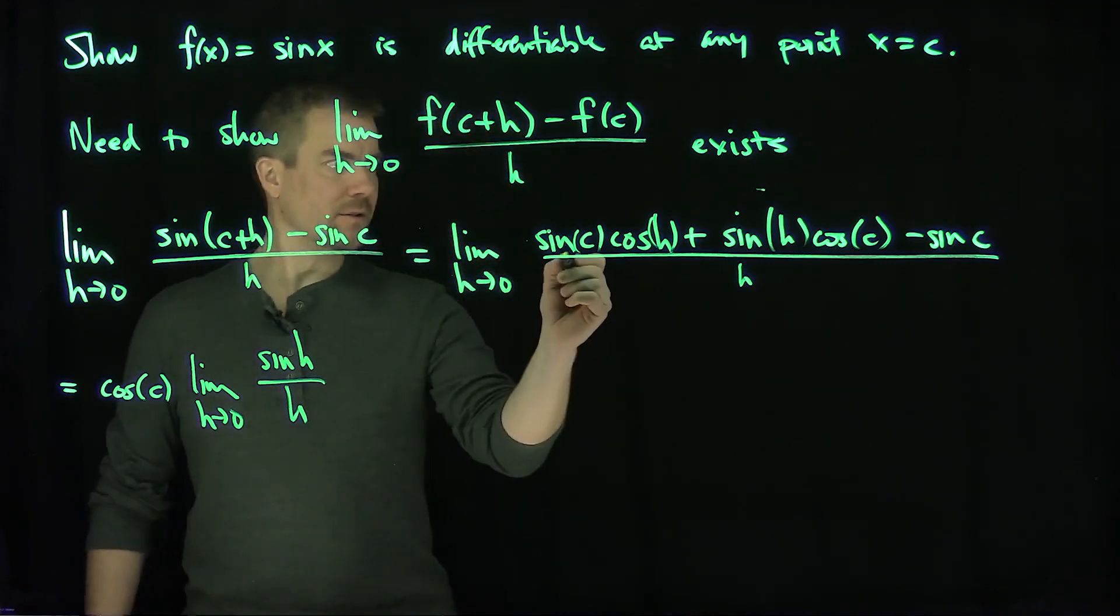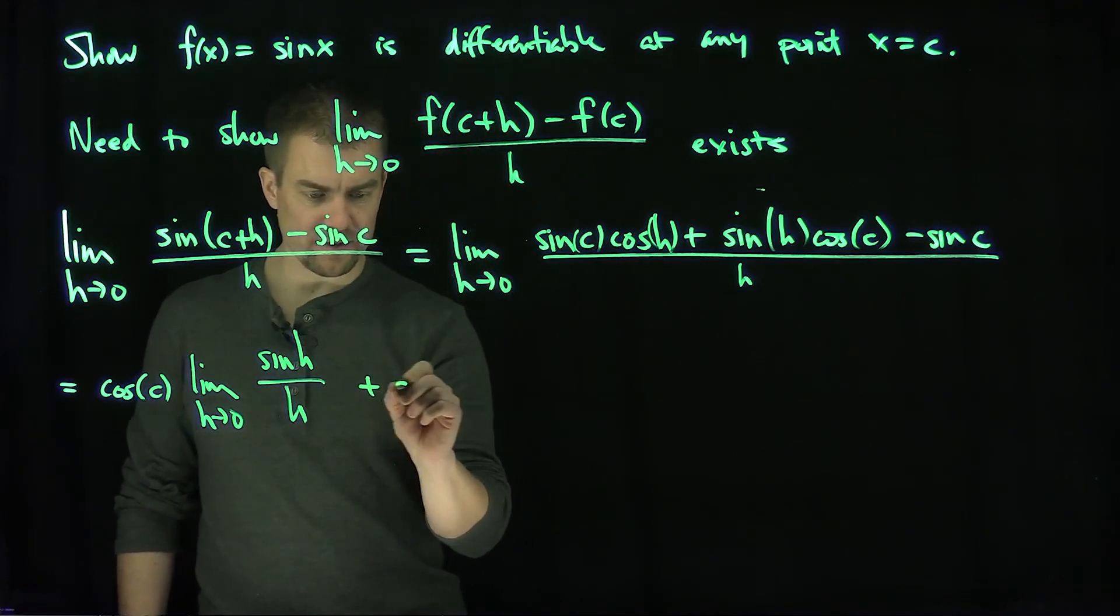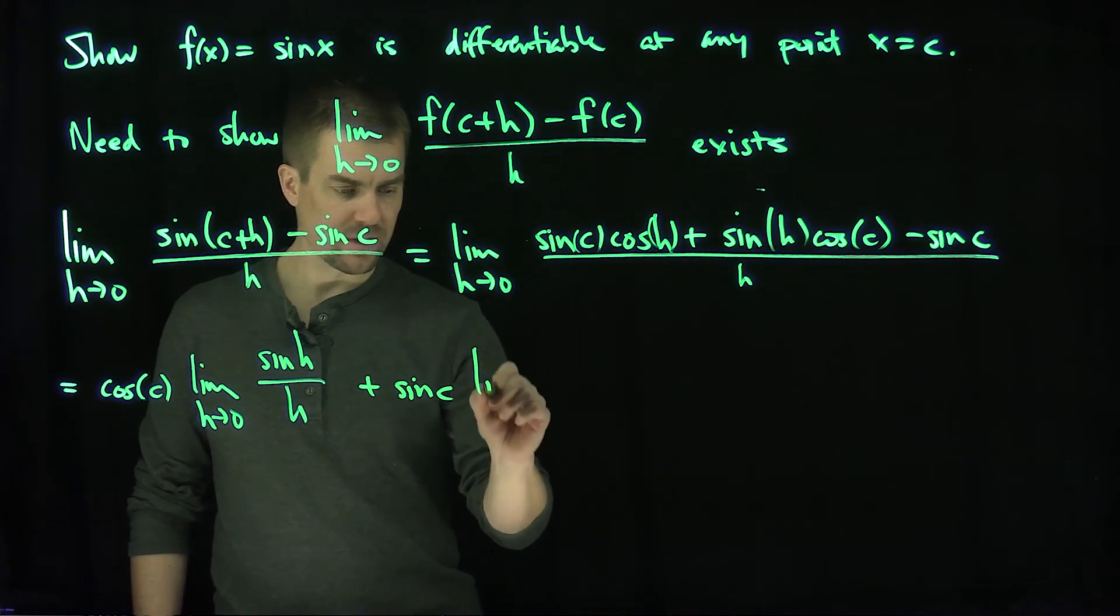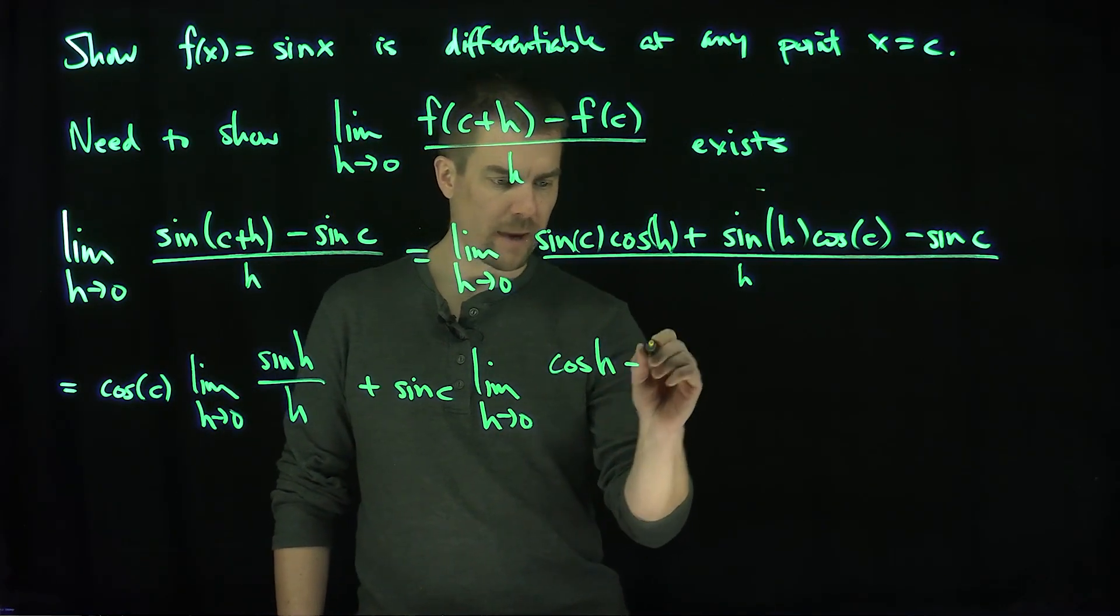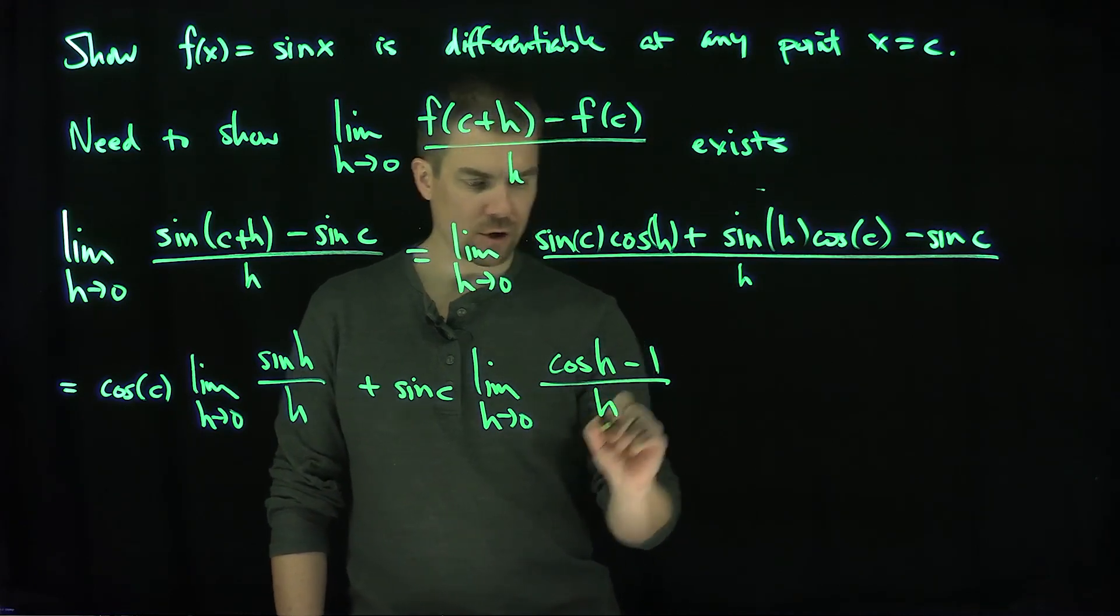And then the other terms have a common factor of sine of c, so then we have plus the sine of c times the limit as h goes to zero of cosine of h minus one over h.